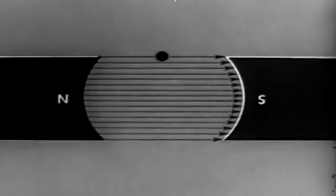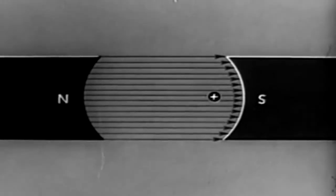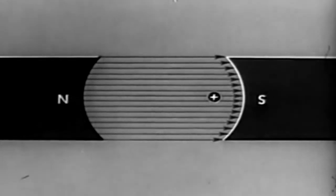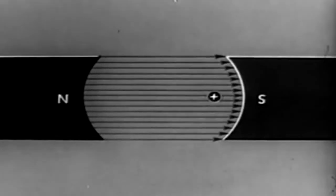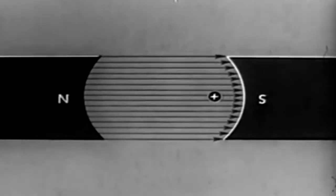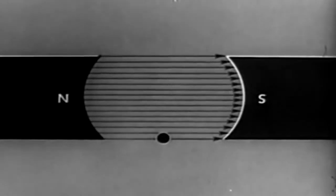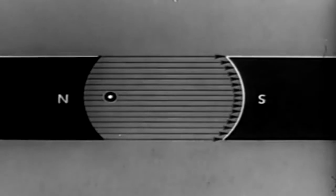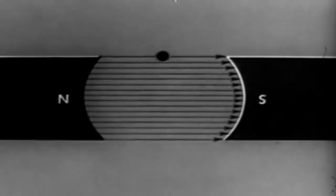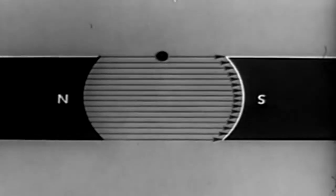At the top of the field, no lines are being cut and no EMF is generated. As the conductor keeps turning, the number of lines cut increases so that at a quarter turn or 90 degrees, the maximum number is being cut and maximum EMF is generated. Again at 180 degrees, no lines are cut, no EMF. We reach a maximum again at 270 degrees, and finally at 360 degrees, no lines are cut. The conductor has rotated 360 mechanical degrees, corresponding to 360 electrical degrees.